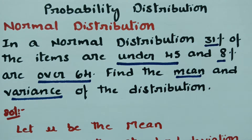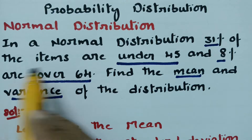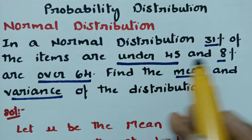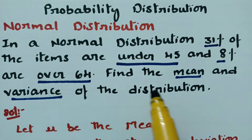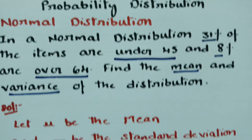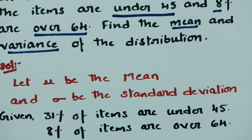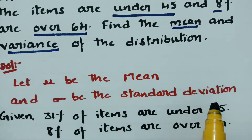Two statements are given: 31% of the items are under 45, and 8% are over 64. We have to be very careful while plotting — under means left side, over means right side. We need to find the mean and the variance of the distribution. Let mu be the mean and sigma be the standard deviation.